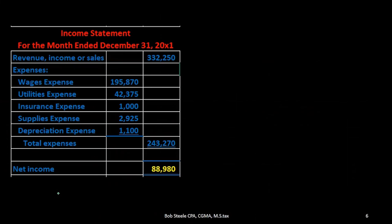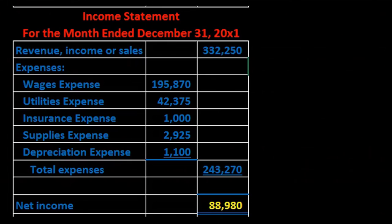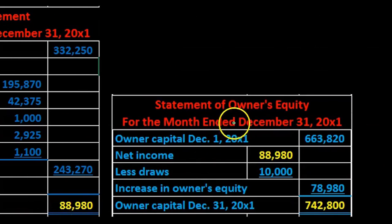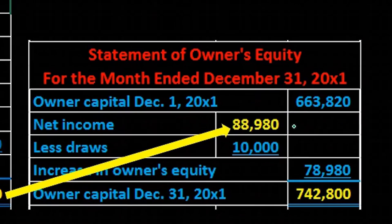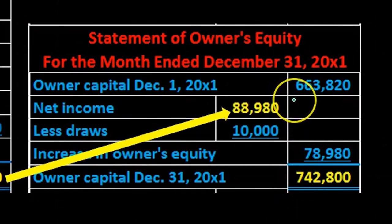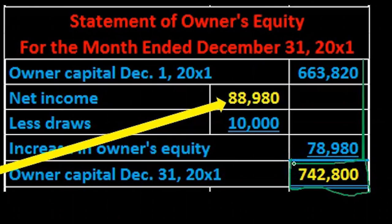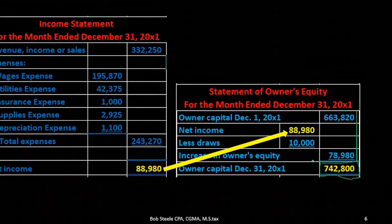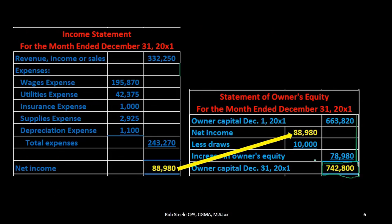Now that we have the income statement, we can consider how it fits into the big picture of the double entry accounting system. The net income figure flows into the statement of owner's equity, which breaks out the equity section of the balance sheet. It shows beginning equity plus net income minus draws, giving ending equity. That ending equity figure appears on the balance sheet, tying the income statement to the accounting equation: assets = liabilities + equity.